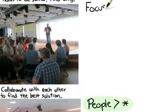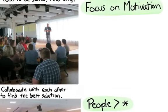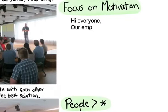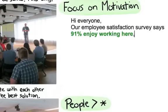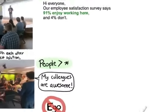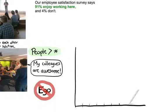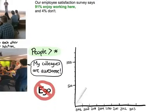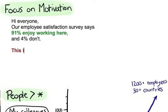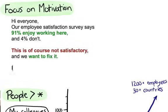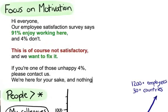We focus a lot on motivation. Here's an example, an actual email from the head of people operations. Hi everyone, our employee satisfaction survey says 91% enjoy working here and 4% don't. Now that may seem like a pretty high satisfaction rate especially considering our growth pain. From 2006 to 2013 we've doubled every year and now have over 1200 people. But then he continues, this is of course not satisfactory and we want to fix it. If you're one of those unhappy 4% please contact us. We're here for your sake and nothing else. So good enough isn't good enough.